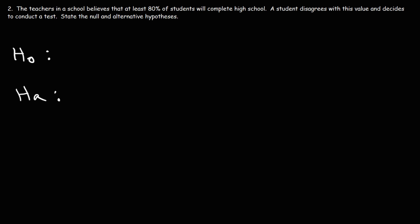So let's start with the null hypothesis. The status quo, or the current accepted value, is at least 80%. The teachers in this school believe that at least 80% of students will complete high school. Since we're dealing with a percentage, this is going to be a proportion.